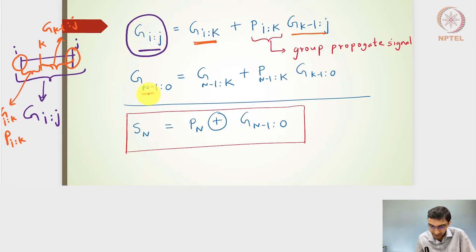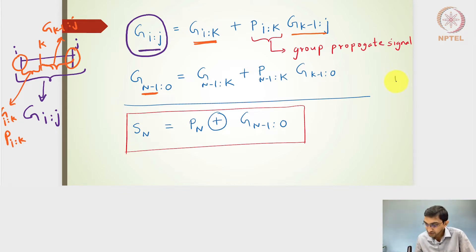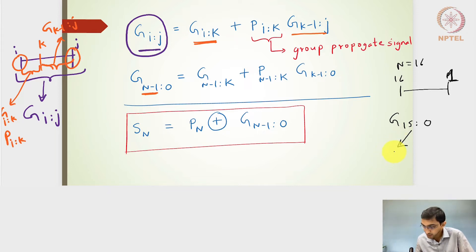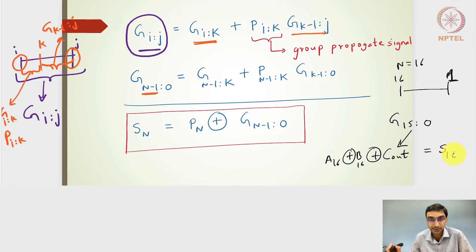If I have a 16-bit adder, from bit 1 to bit 16, and I want to develop an adder system for 16 to 1 bits where n=16, I need to extract G(15:0). This will be considered as the carry out for the 16th bit. If I XOR that with a16 XOR b16, I get the sum bit S16. That's why we take the group generate G(n-1:0).